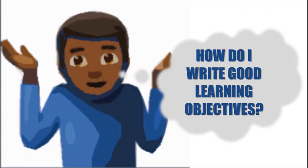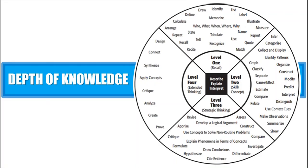How can I write good learning objectives? The quality of your objectives will determine the quality of the lesson. The first thing you need to understand is the depth of knowledge. There are four levels: level one is recall, level two is skill and concept, level three is strategic thinking, and level four is extended thinking. You can see the verbs used to construct these objectives at each level.